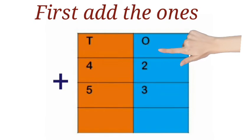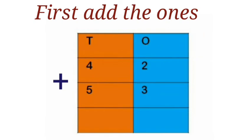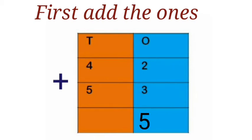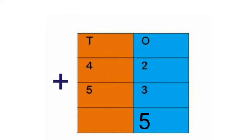First we add the 1's place: 2 plus 3. Put 2 on the fingers, next 3 on the fingers. Count on from 2: 3, 4, 5. The answer is 5.